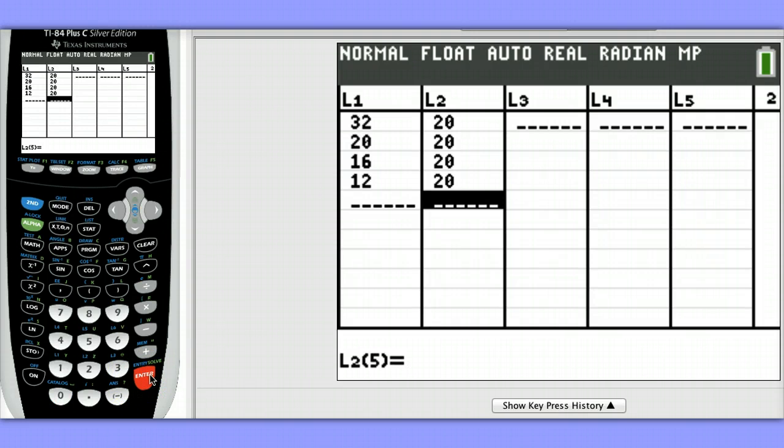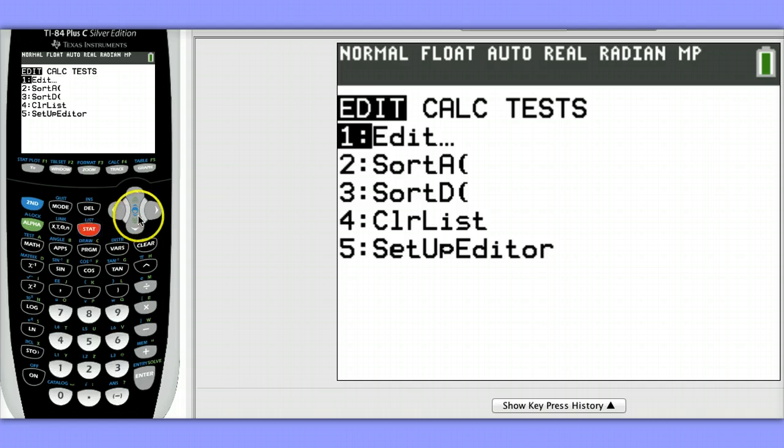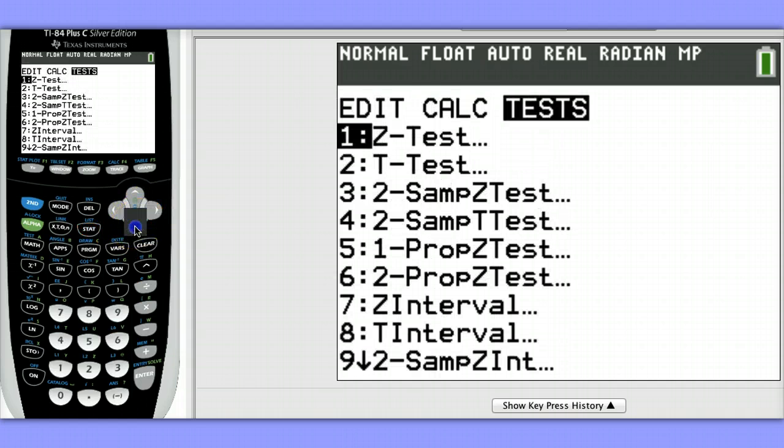Now we're ready to run our test. Hit Second Mode to quit out of that and go back to the home screen. Now hit Stat, go over to Test, scroll to the very bottom to find chi-squared goodness of fit.